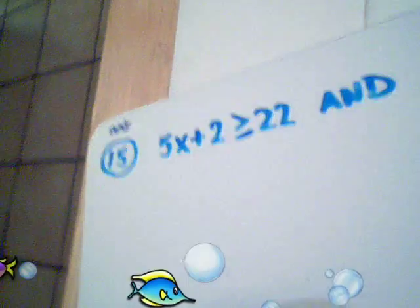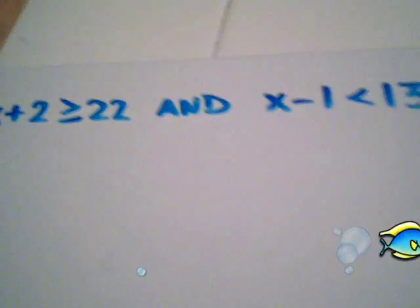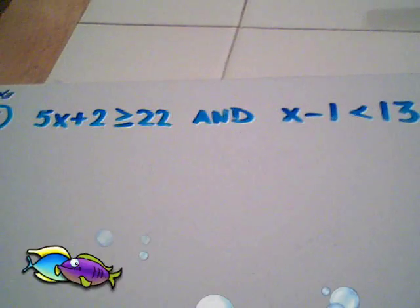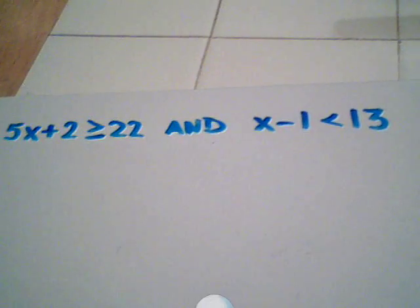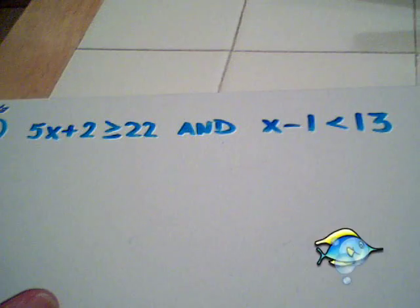So come with me and the little fish and we're going to go here to my paper. Let me extend the camera a little bit here, pull the cord out, and we are at the paper. Here's where we are: we have the compound inequality 5x plus 2 is greater than or equal to 22 and x minus 1 is less than 13.